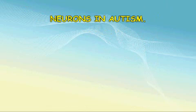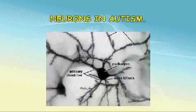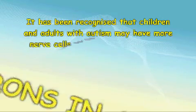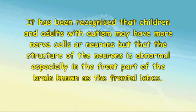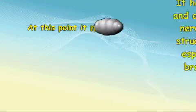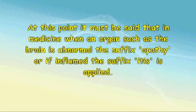Neurons and autism. It has been recognized that children and adults with autism may have more nerve cells or neurons, but that the structure of the neurons is abnormal, especially in the front part of the brain known as the frontal lobes. The frontal lobes are important in the development of thoughts and feelings which lead to behavior. In medicine, when an organ such as the brain is abnormal, the suffix -pathy, or if inflamed, the suffix -itis, is applied.